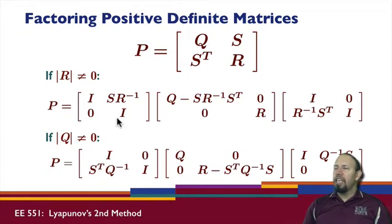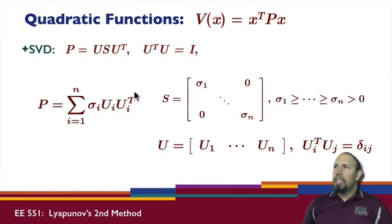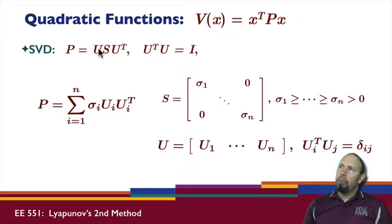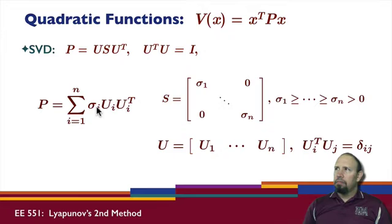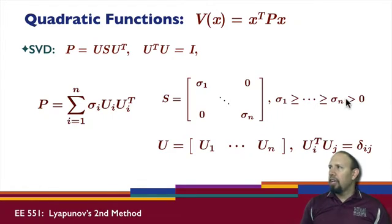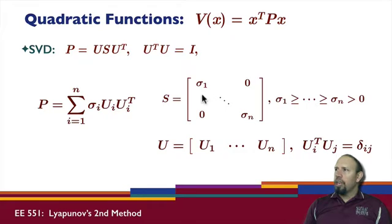In addition to using that factorization, we can use the singular value decomposition on P. Because P is symmetric, we can use the same U on both sides, where U is an orthogonal matrix. P can be written as a sum of singular values times outer products of singular vectors. The matrix S is the diagonal matrix of singular values, and for a positive definite matrix, all singular values are strictly positive, generally ordered from largest to smallest.